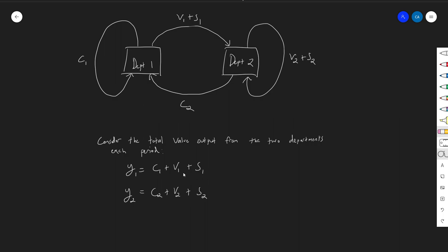We still want to be able to do that breakdown, but a little ambiguity arises when y1 and y2 are changing. Specifically, if C1 changes, it could be because technology changed and altered the C-over-V ratio, or it could be because reinvestment happened. So we need a more sophisticated way to break things down into C, V, and S than just writing it out and saying it exists.